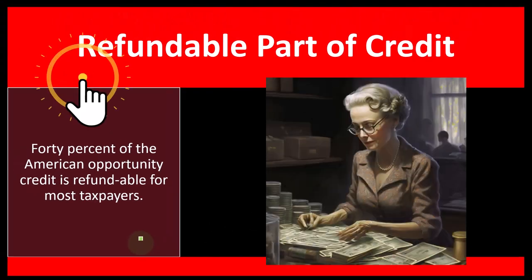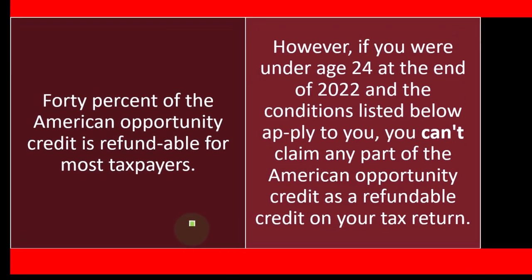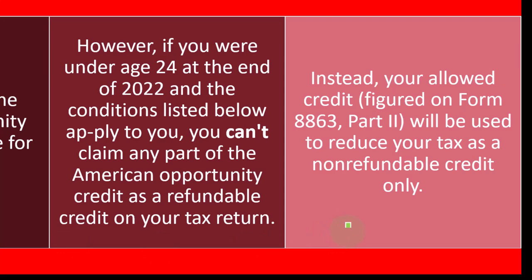40% of the American Opportunity Credit is refundable for most taxpayers, meaning that portion can take the tax liability below zero — functioning more like a benefit or welfare program. However, if you were under age 24 at the end of 2022 and certain conditions apply, you can't claim any part of the credit as a refundable credit. Instead, your allowed credit from Form 8863 Part 2 will reduce your tax as a non-refundable credit only.